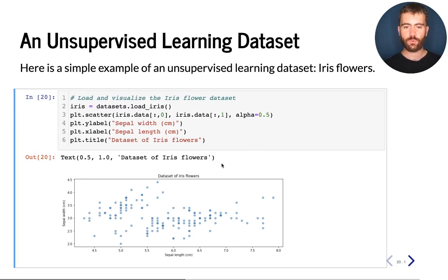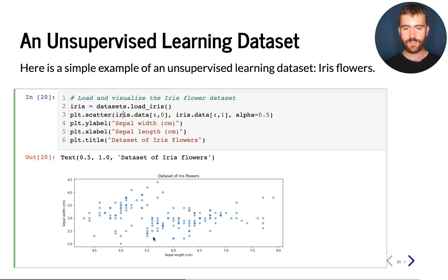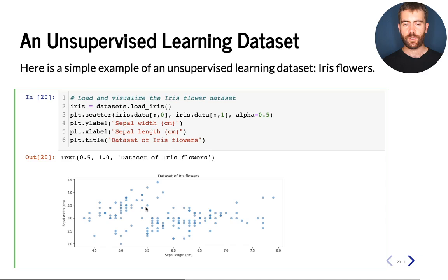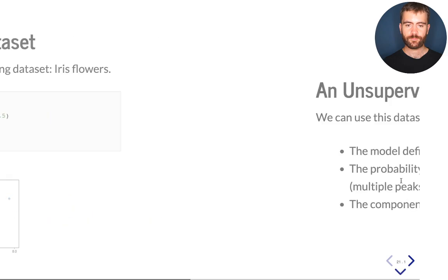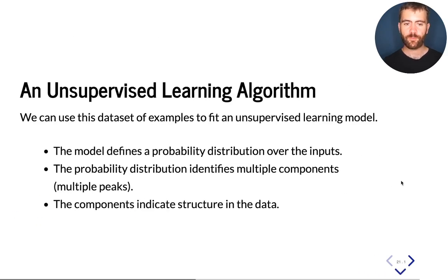Here's a little example of what unsupervised learning can do. I'm going to use the datasets function in scikit-learn to load a dataset called the iris dataset. This is a dataset of iris flowers, and for each flower we have two measurements: the sepal width and the sepal length, in centimeters. Each data point corresponds to a flower with measurements on the x and y axes. Just looking at this dataset, you can already see it has some structure — some points seem to be more similar to each other than others. An unsupervised learning algorithm can be used to detect this structure.